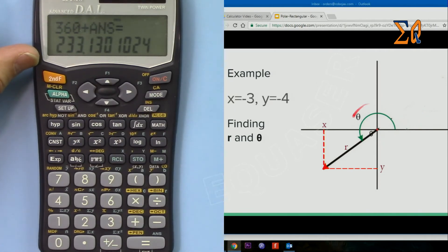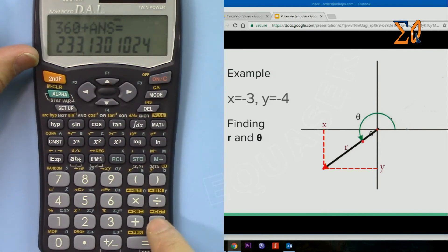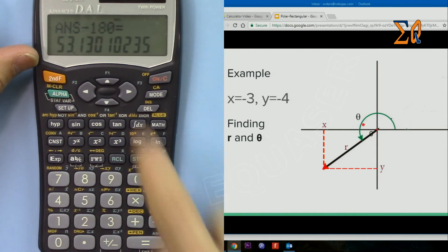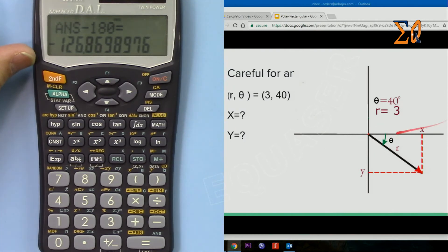If you want this value only, then just subtract 180, because from here to here is 180, minus 180, and you will get 53.1 from here to here.